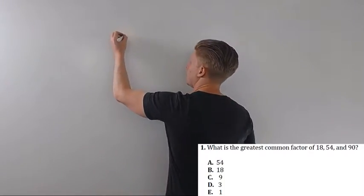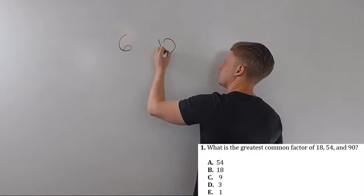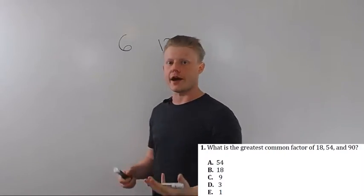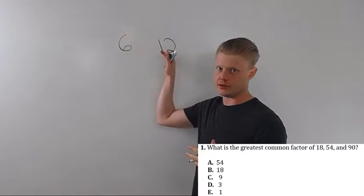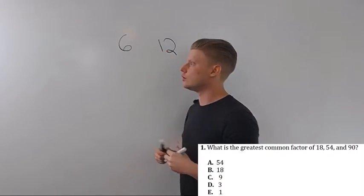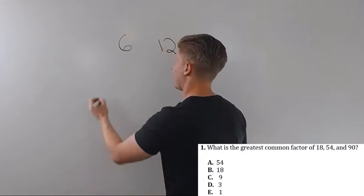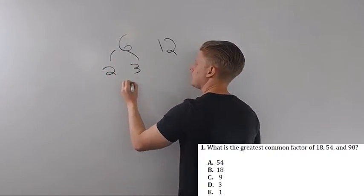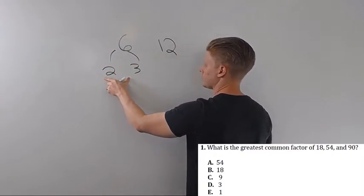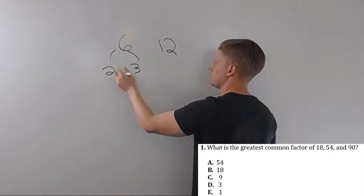Let's say I wanted to find the greatest common factor of 6 and 12. Now the greatest common factor is the biggest number that will divide evenly into both of these numbers. So one way to do it is to prime factor. You probably remember this from middle school. I can break 6 down into 2 times 3, both primes, and I'm done.